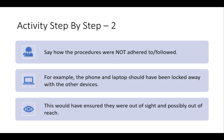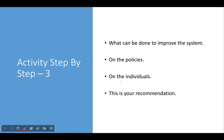Step two: say how the procedures were not adhered to — how they were not followed. For example, the laptop and phone should have been locked away with the other devices. This would have ensured they were out of sight and out of reach, because if something is locked away behind a locked cupboard in a room with a key, someone coming in to steal small items is probably just going to look around the desk and table — they don't want to make too much noise trying to break a door handle off.